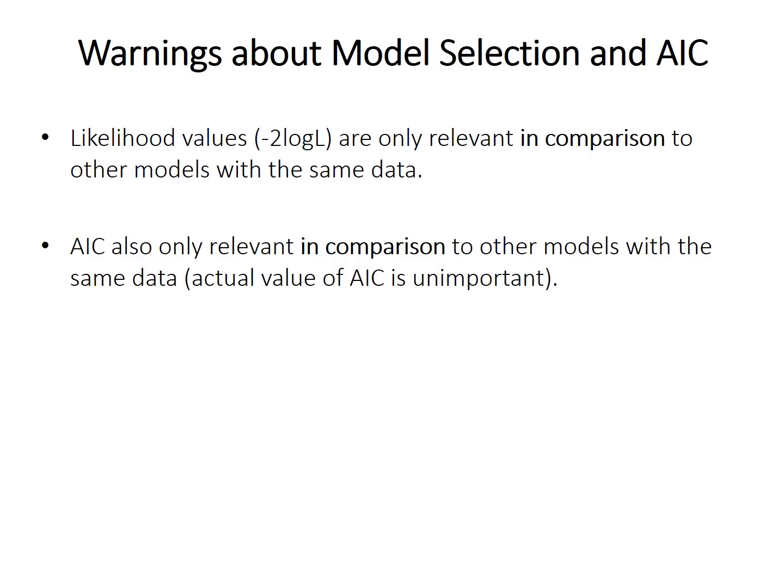Okay, so just to end with some warnings when you're performing model selection and using AIC. So both the likelihood values, the maximum likelihood values log L, and the AIC values are only relevant when you're comparing them among models run on the same data. So you can't compare AIC on one data set to AIC on a different data set. It's just fundamentally not meaningful because the absolute AIC value is not important. The reason for this ultimately is that that Kulback-Leibler distance or information is measured in a relative sense. And so because it's relative, the actual AIC value is not comparable across different data sets.